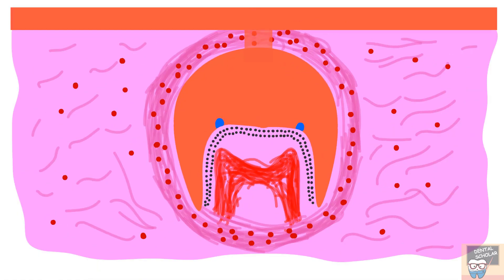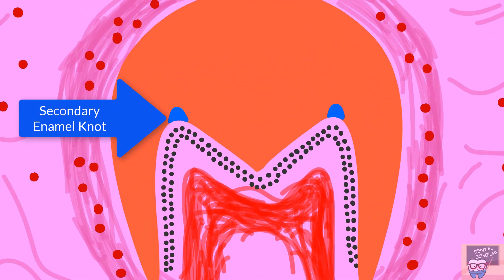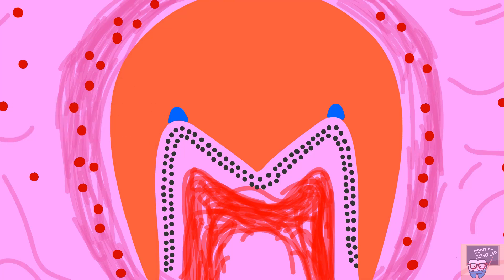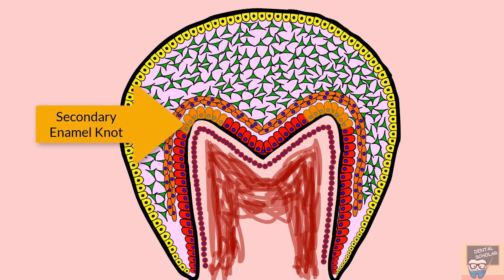During the transition from early to late bell stage, secondary enamel knots appear, and their number corresponds to the number of cusps — two for a premolar, four for a four-cusp molar. This establishes the future shape of the tooth in the inner enamel epithelium and the basement membrane. The diagram shows the various cells present in the late bell stage, including the secondary enamel knot.